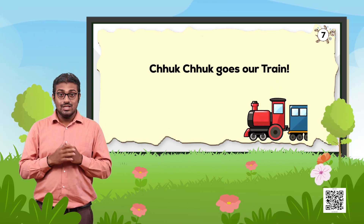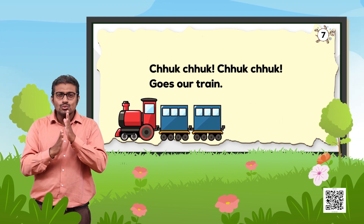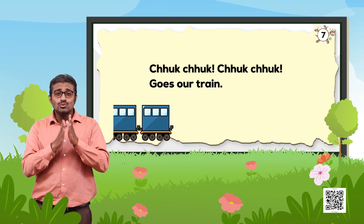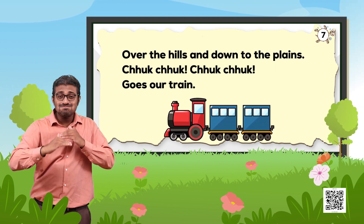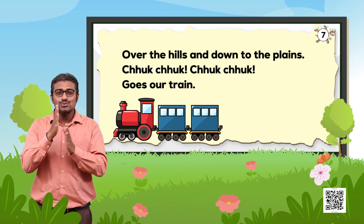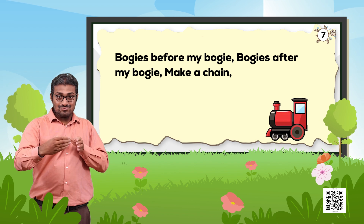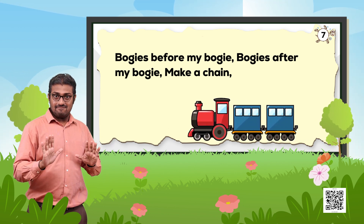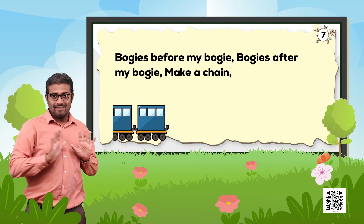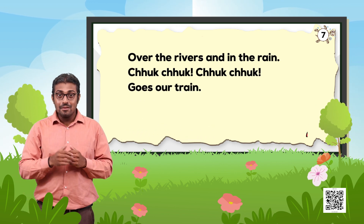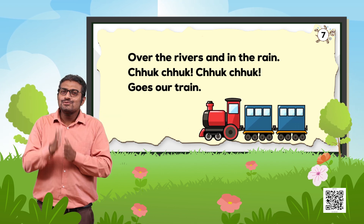Chuk Chuk Chuk Chuk goes our train. Over the hills and down the plains, Chuk Chuk Chuk Chuk goes our train. Bogies before my bogey, bogies after my bogey, make a chain. Over the rivers and in the rain, Chuk Chuk Chuk Chuk goes our train.